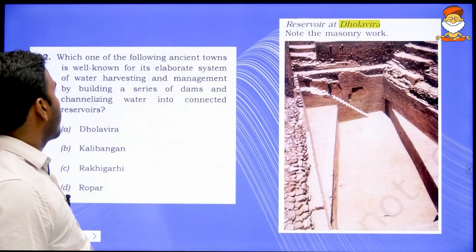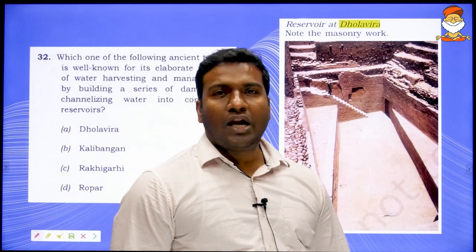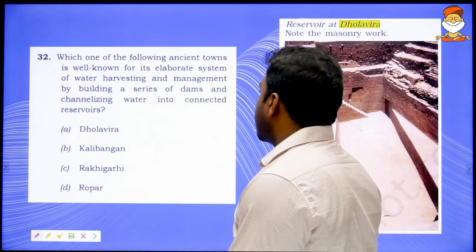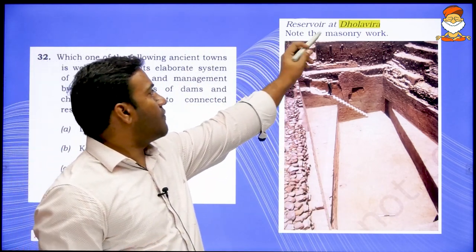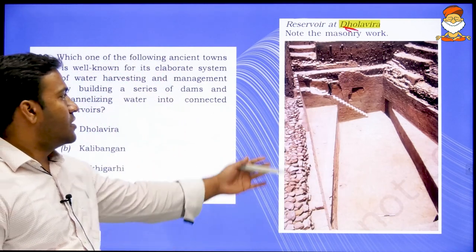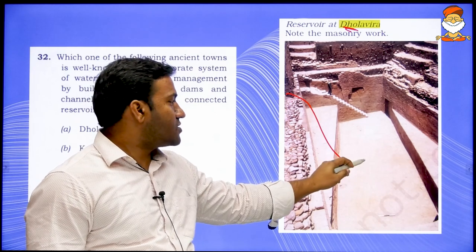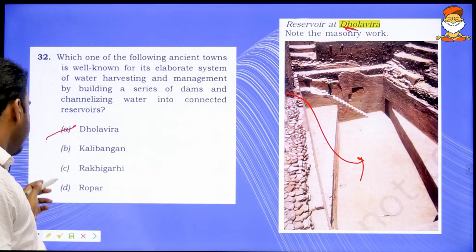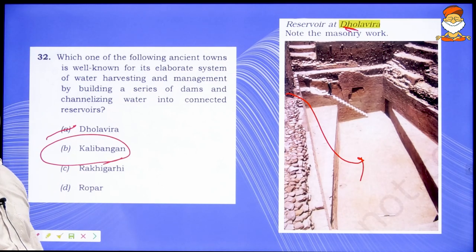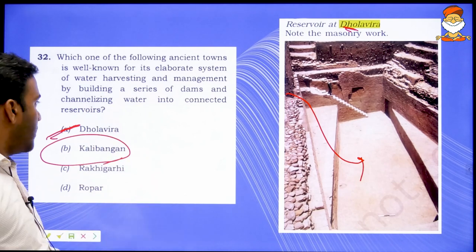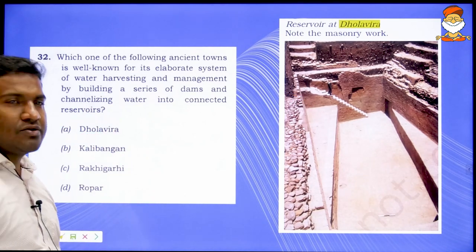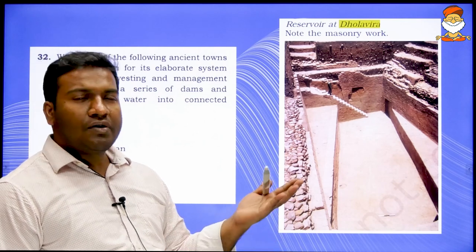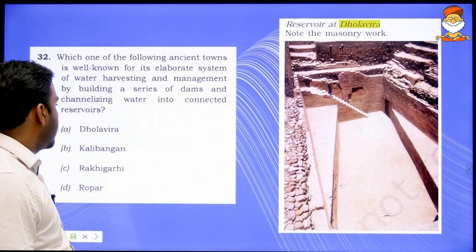Which ancient town is well known for its elaborate water harvesting system with dams and connected reservoirs? In NCERT we have reservoirs at Dholavira — this is how dams and reservoirs were constructed in the Indus Valley. We take Dholavira as the answer. Some have given Kalibangan as the answer — we will claim Dholavira based on NCERT until UPSC says otherwise. We do not need 180-190 marks; aiming for 120-130 is enough.